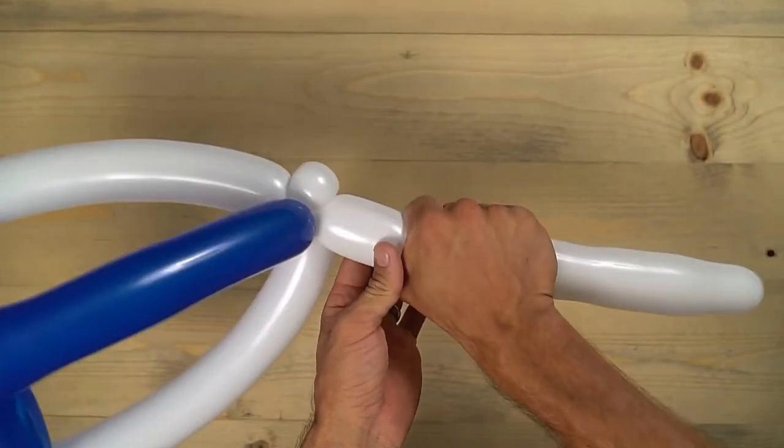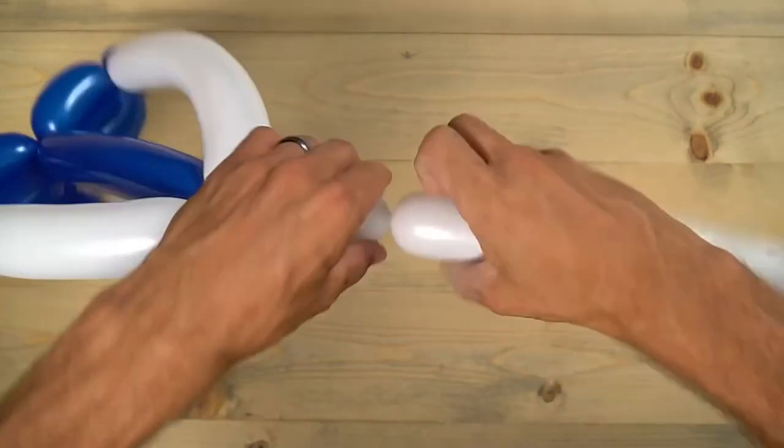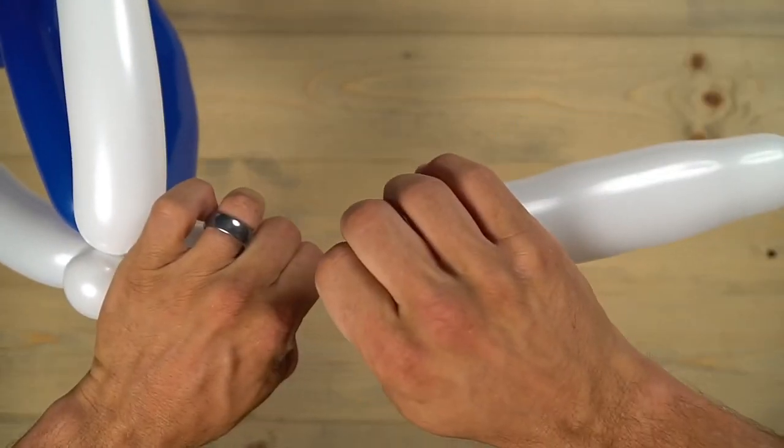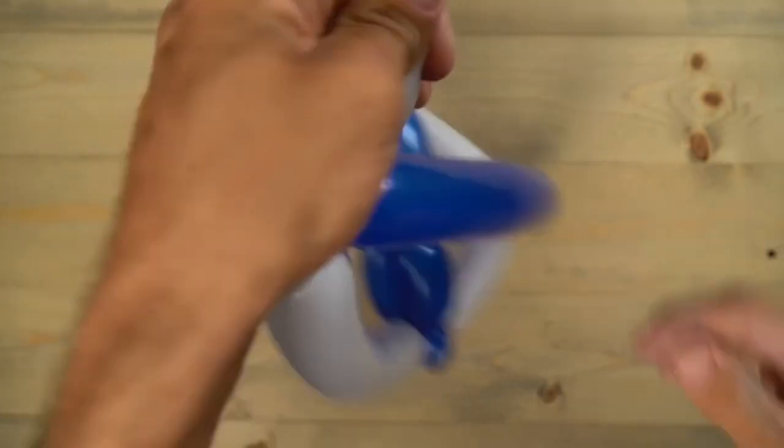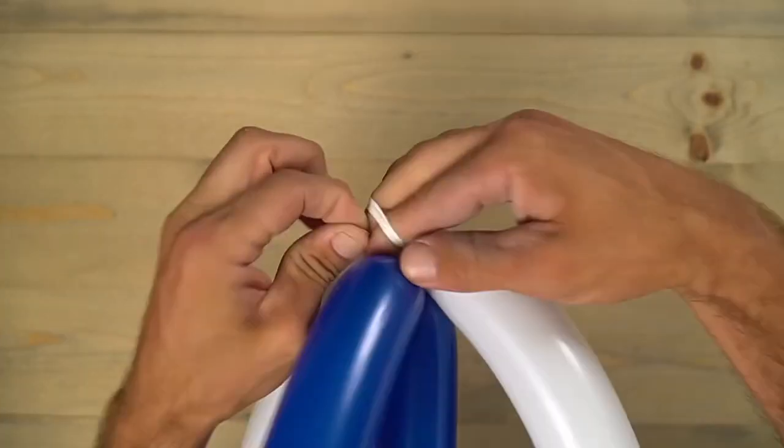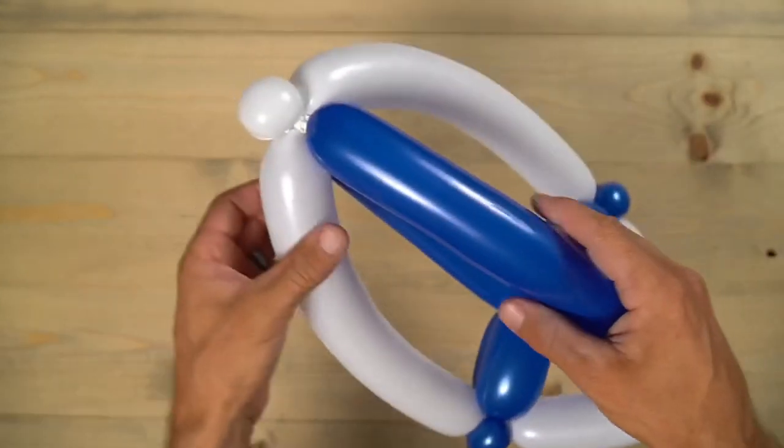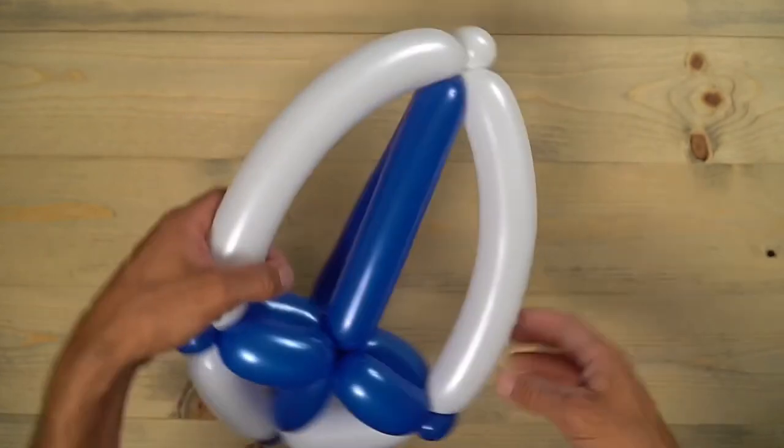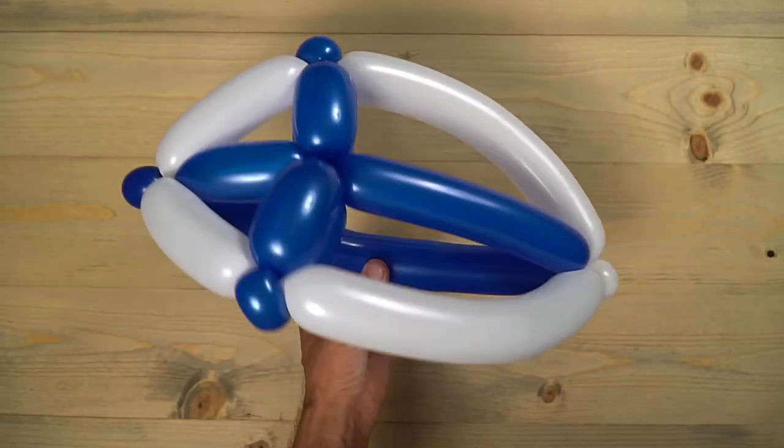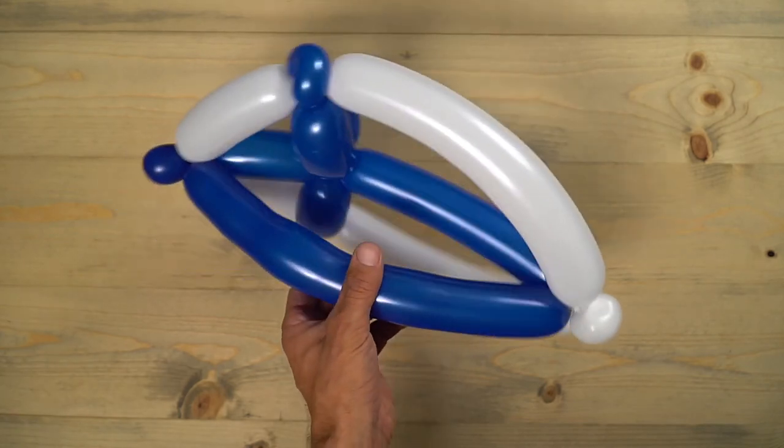We don't need that so go ahead and take it off. Just pop that off right there. And make your tie and then hide that into place. And that my friends is the balloon shield with just two balloons. Looks great. Good job guys.